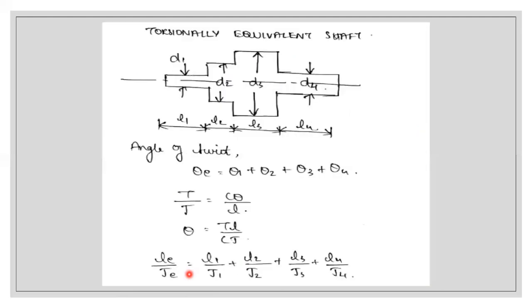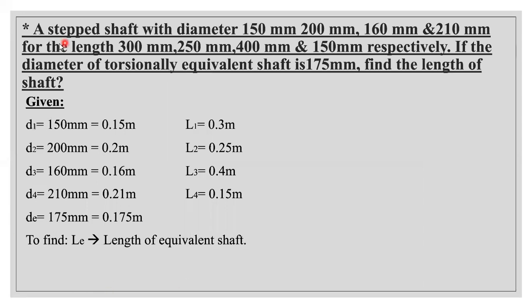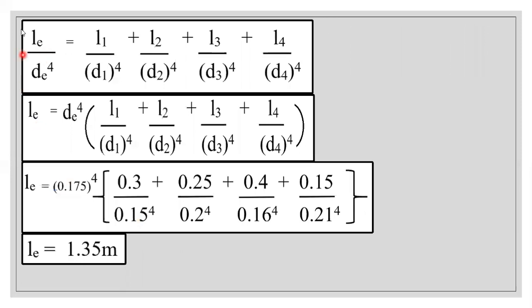Now let's look at a sample problem. A stepped shaft has diameters 150 mm, 200 mm, 160 mm, and 210 mm, with corresponding lengths of 300 mm, 250 mm, 400 mm, and 150 mm. The diameter of the torsionally equivalent shaft is given as 175 mm. We want to find the length of the equivalent shaft. Write all four diameters and lengths, converting to meters, along with the equivalent shaft diameter.